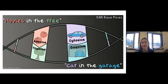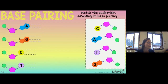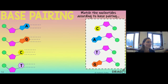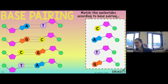Now practice base pairing. Use one of those mnemonics and click and drag the correct partners for A, G, C, and T. Cytosine pairs with guanine — put it at the end of the lines representing hydrogen bonds. Adenine pairs with thymine. Thymine pairs with adenine, and cytosine with guanine — so you should have T, C, G, A in that order as the paired bases.